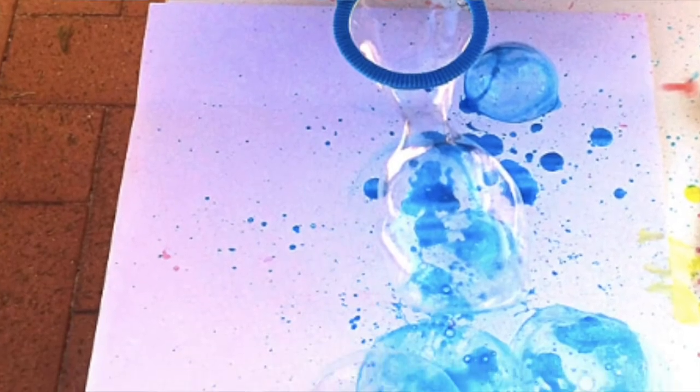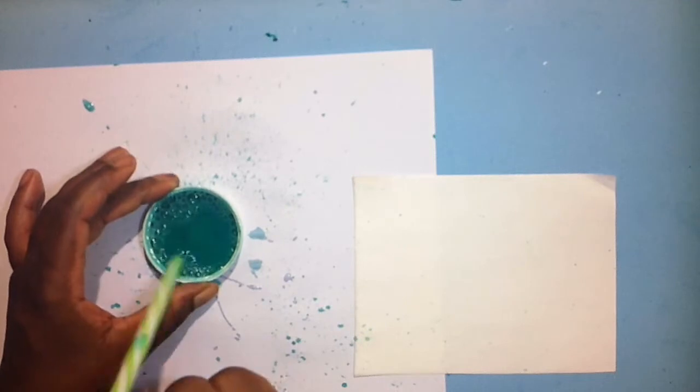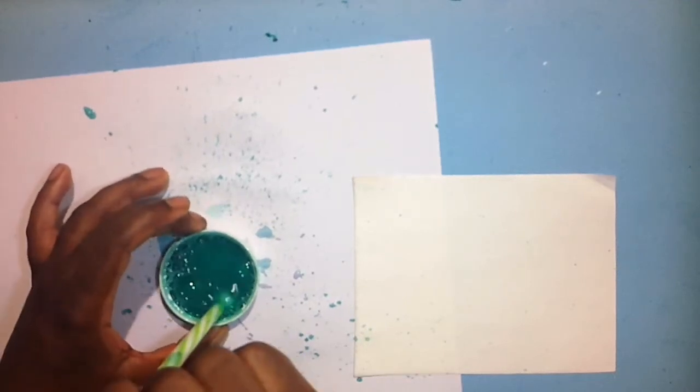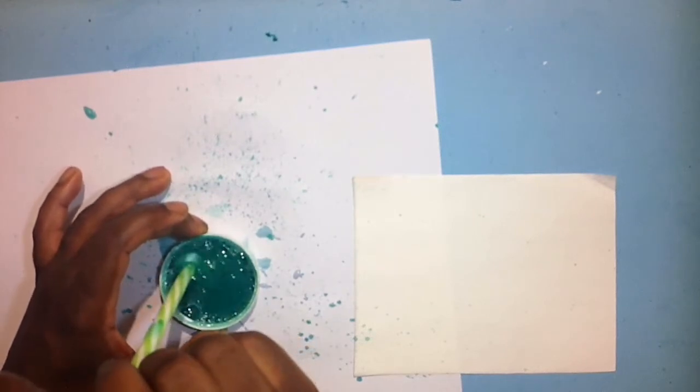When the bubbles have been created, you can then put a paper over it and you will get that nice texture. That is one of the ways that you can do it. So just as I'm doing it here, you can also do the same.